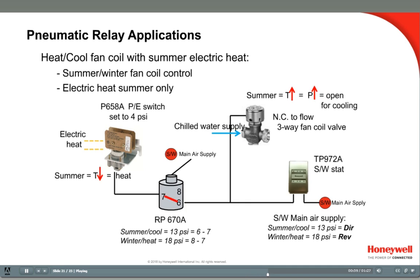In the summer, the main air supply is at 13 psi. This puts the thermostat in the cooling mode — it's direct-acting and the valve modulates to cool the rooms. The RP670 summer-winter relay now connects port 6 to 7, so the branch air passes to the P658PE switch. If the room cools down, the electric heat panel can now provide warmth. No heat is possible from the coil because it's full of chilled water all summer.